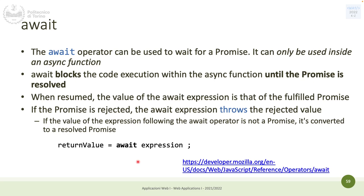Await is an operator that can be used for waiting and blocking the execution of code within the asynchronous function until the promise is fulfilled — is resolved. So it does what the dot-then was doing before. If the promise is rejected, await throws the rejected value — it will create an exception and throw the exception with the rejected value, like in a catch.